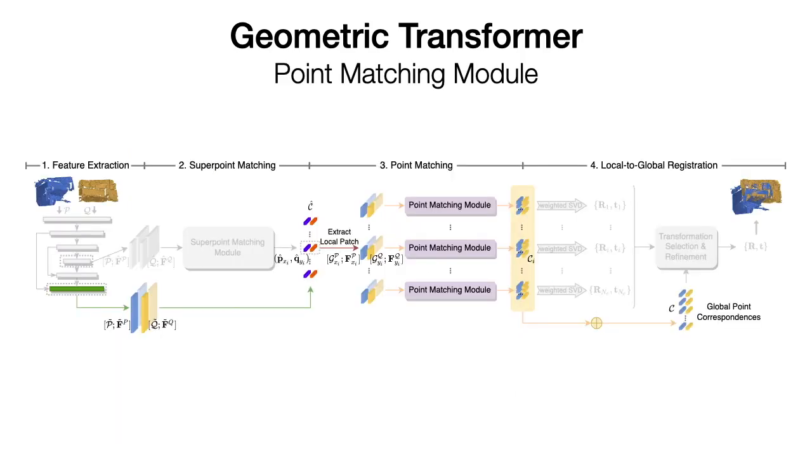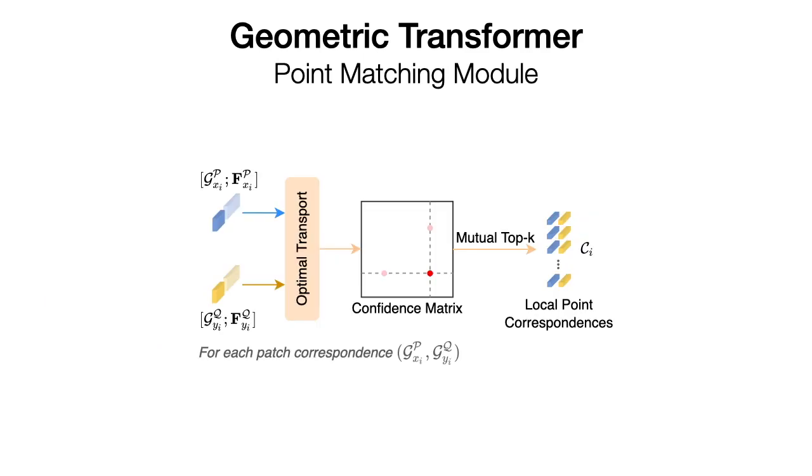In the point matching stage, the superpoint matches are further refined to dense point correspondences. For each superpoint match, we use optimal transport matching to extract its local point correspondences from the neighboring patches. The local point correspondences from all superpoint matches are combined as the final global correspondences.